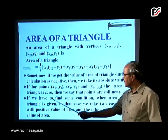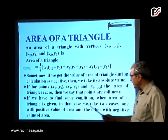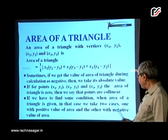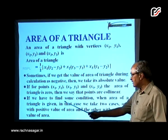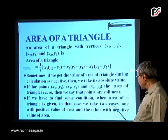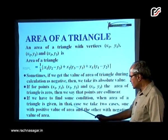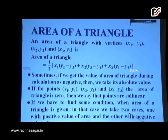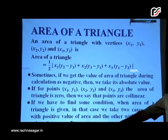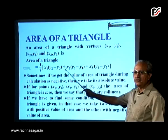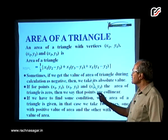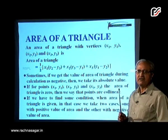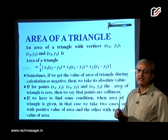If we have to find some condition when area of a triangle is given, we take two cases: one with positive value of area and the other with negative value of area. This is because sometimes during calculations the answer can be positive as well as negative.